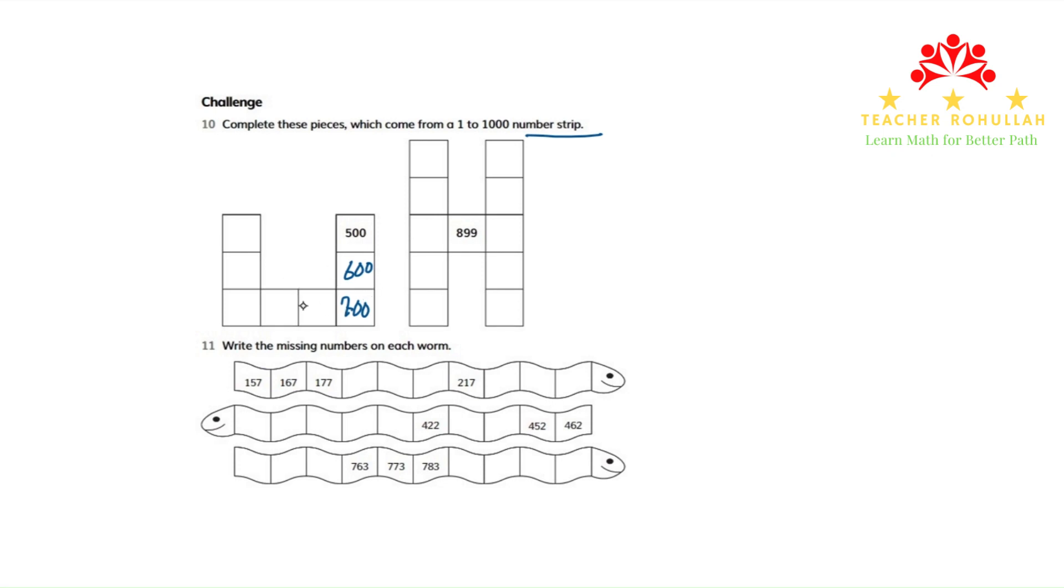And to the left of 700, it should be 699. And to the left of 699, we have 698, 697. Above 697, we have 597. And above 597, we have 497. The first part is done.